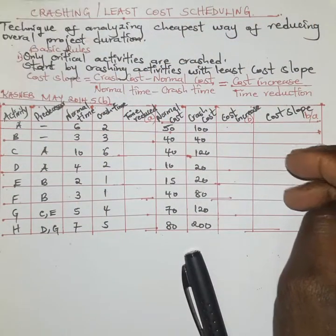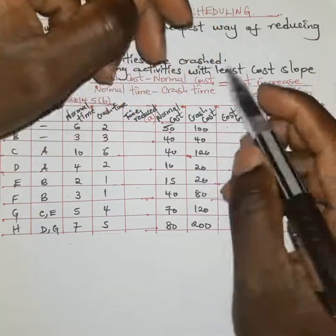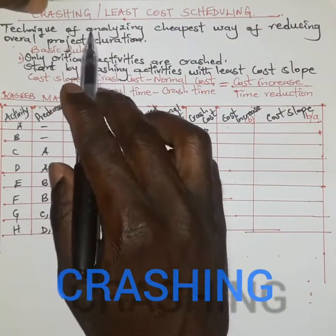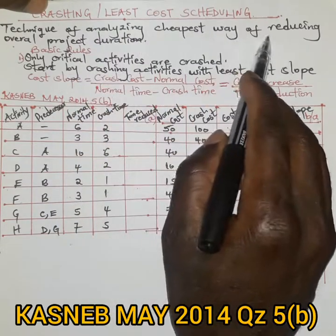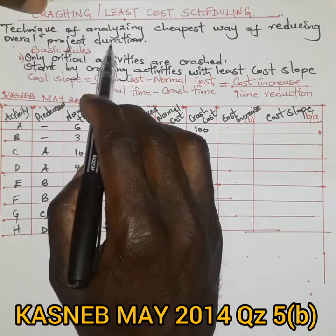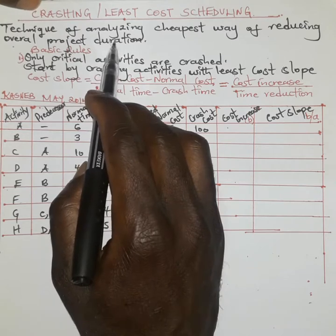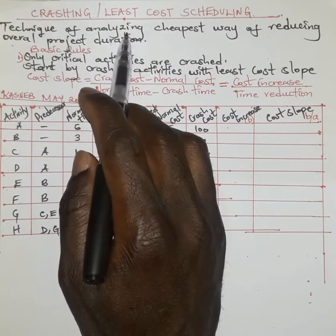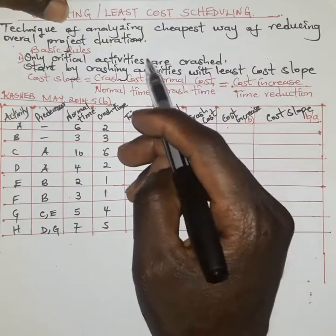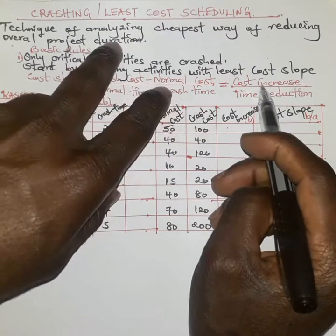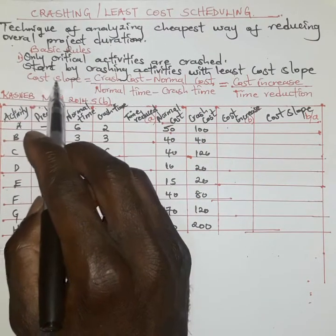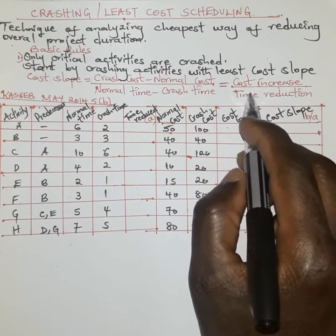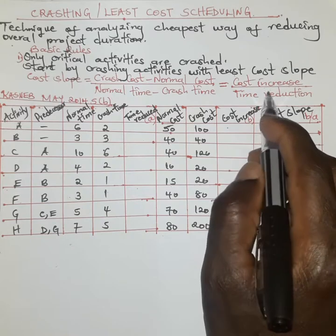Let's do something on network analysis — specifically crashing. Crashing is a tool for analyzing the cheapest way of reducing the overall project duration. In any project, reducing the project duration will incur an incremental cost. When we talk about this incremental cost, we talk about the cost slope, which measures how much the cost increases per unit time reduced.